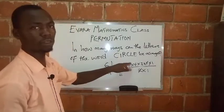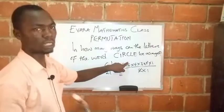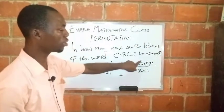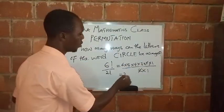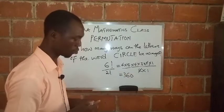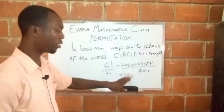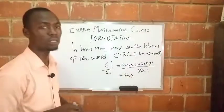So if you multiply all these figures now, six times five is thirty, thirty times four is one twenty, and one twenty times three is three sixty. So it means the letters of this word circle can be arranged in 360 different ways.